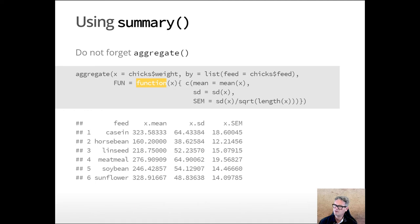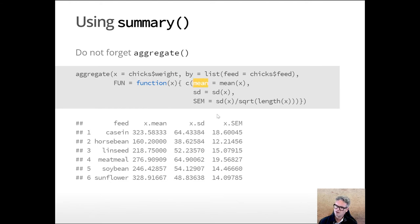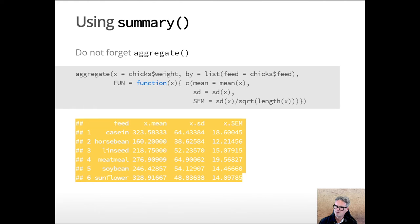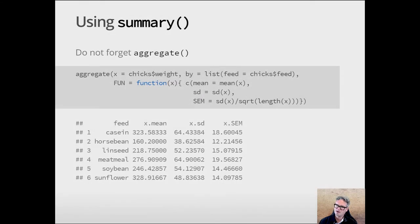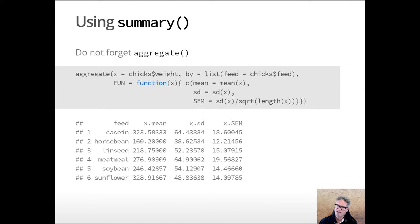We can pass a single function like mean to the fun argument, but it's often more useful to generate several at once. We can pass a function we create to aggregate. Here, the function of input X — where X is set to chick weight — calculates the mean, the standard deviation, and the standard error of the mean. What we get out is a new data frame with all the means in one column respective to their feed level, all the standard deviations, and all the standard errors of the mean. This is super useful. In one little line of code, you could save what might take 50 lines of code or an hour or two in Excel.